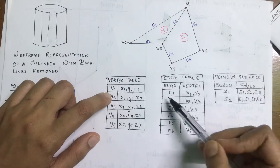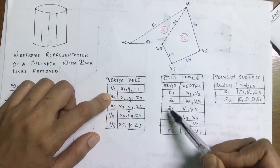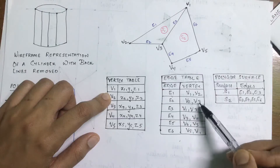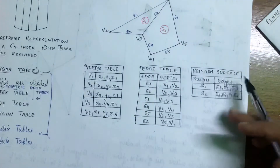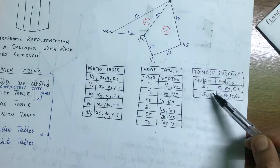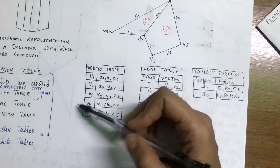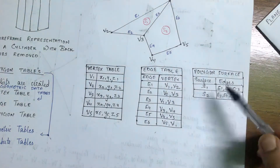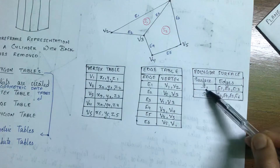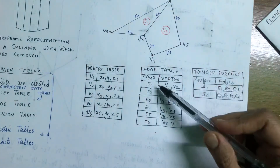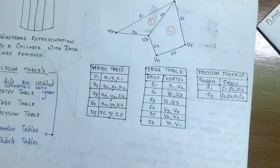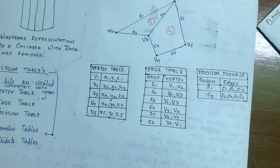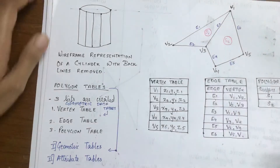E1 will point back to V1, V2; E2 will point back to V2, V3, and so on. The polygon table contains a pointer back to the edge table to identify the edges of each surface — S1 will point to E1, E2, E3, and so forth. This is the kind of information stored inside a polygon table.